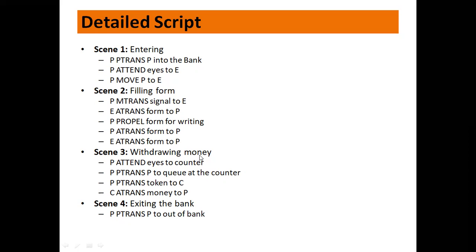Scene 3 — withdrawing money: the customer searches for the counter through his eyes, moves towards the counter and stands in the queue, then hands over the token to the cashier, and the cashier gives him the money. Scene 4 — exiting the bank: P-trans P, meaning P moves out of the bank. So the four scenes are: entering the bank, filling up the form, withdrawing the money, and exiting. This completes the script for withdrawing money from a bank.